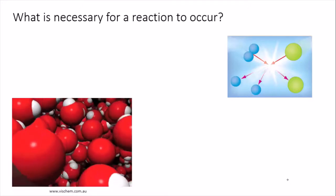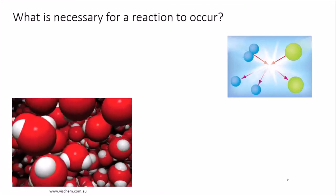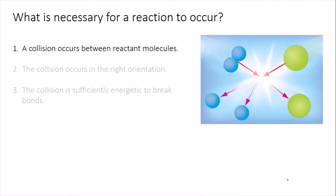What is actually necessary at a molecular level for a reaction to occur? Well, for a reaction to occur, some or all of the bonds in the reactant molecules need to break so that the atoms can rearrange, create new bonds, and form the product molecules.